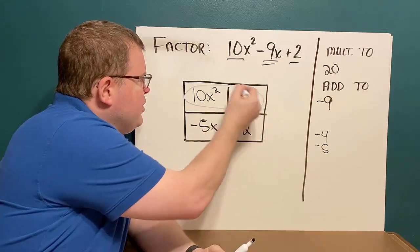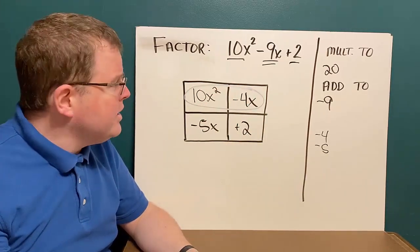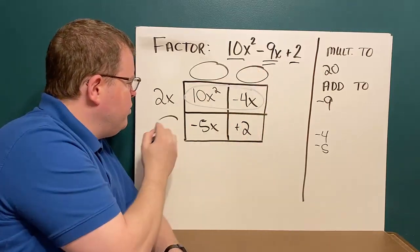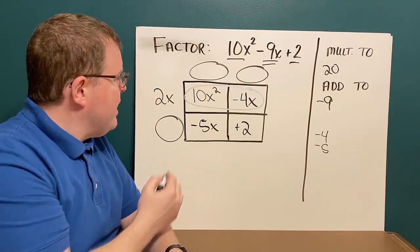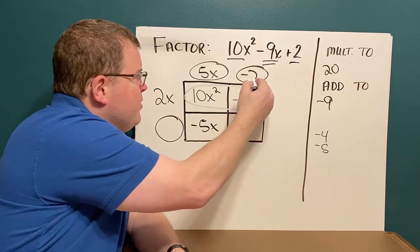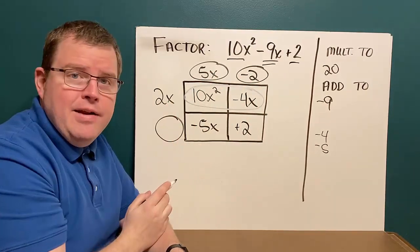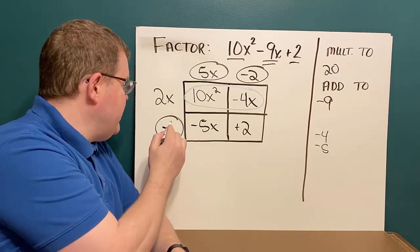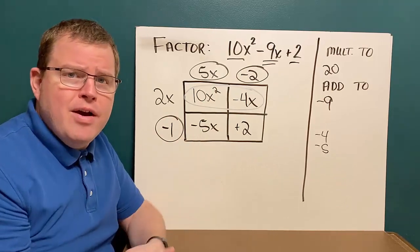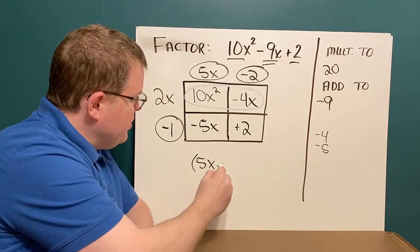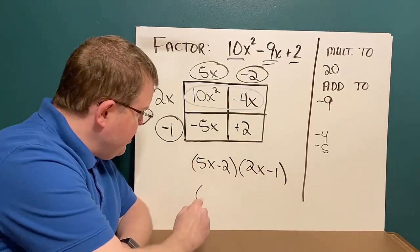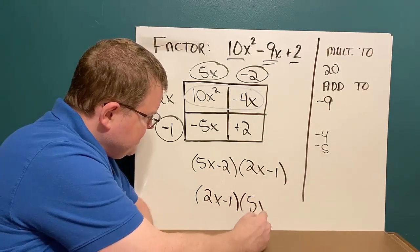Looking across the top, the greatest common factor of 10x squared and 4x is 2x. Using multiplication to fill in the other spots: 2x times 5x is 10x squared; 2x times negative 2 is negative 4x. Going down: 5x times negative 1 is negative 5x, so I put a negative 1. Check: negative 2 times negative 1 equals positive 2. In factored form, I have 5x minus 2 times 2x minus 1. Or I could write them in the opposite order: 2x minus 1 times 5x minus 2.